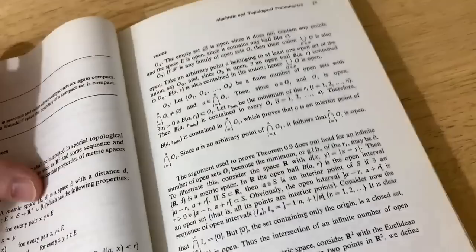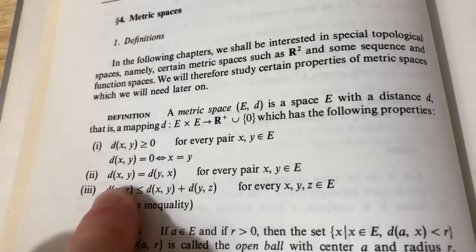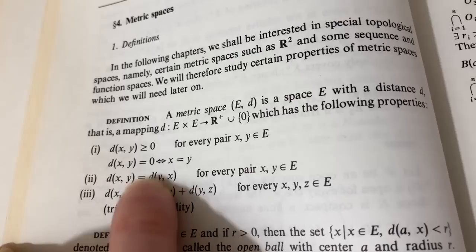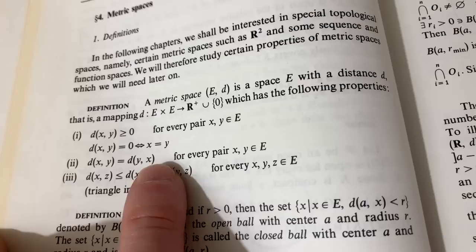Here we go. So a metric space, it's a set with a distance function. The set of real numbers, the distance function is just the absolute value. So the absolute value of X minus Y is greater than or equal to zero. If the absolute value of X minus Y is zero, X is equal to Y. The absolute value of X minus Y is equal to the absolute value Y minus X. And then the triangle inequality holds obviously for absolute values. That's the one that most people know.